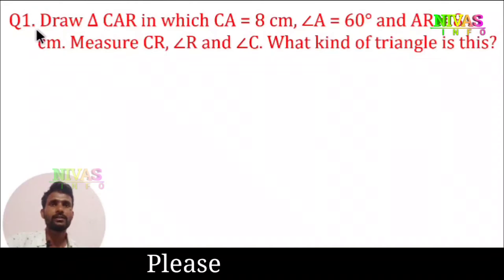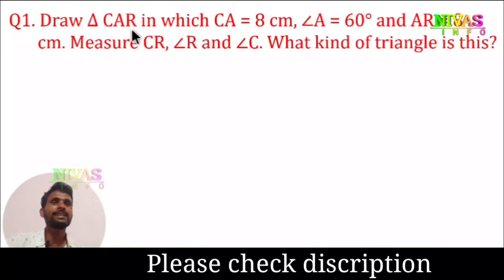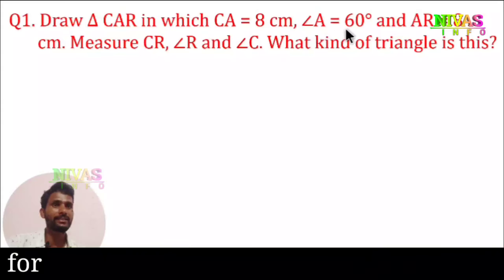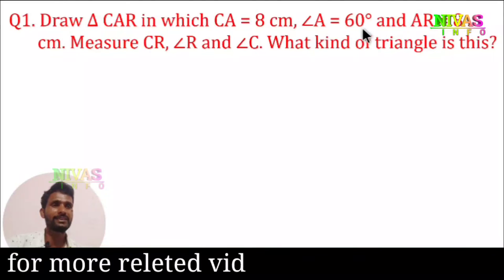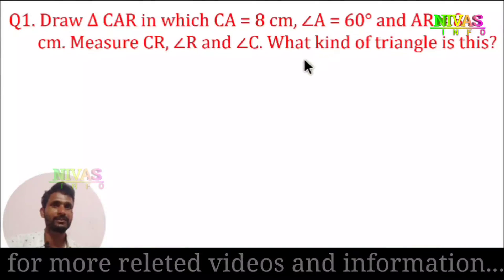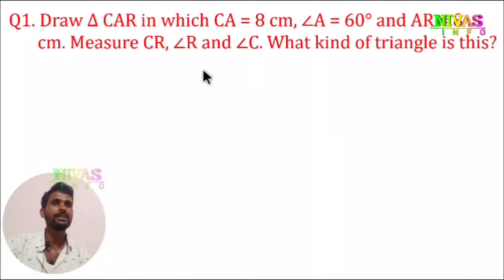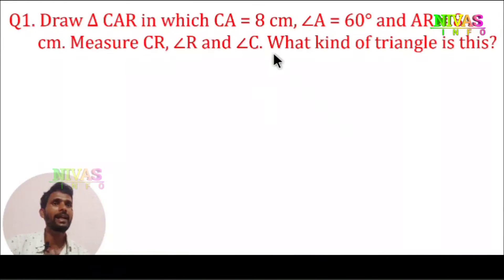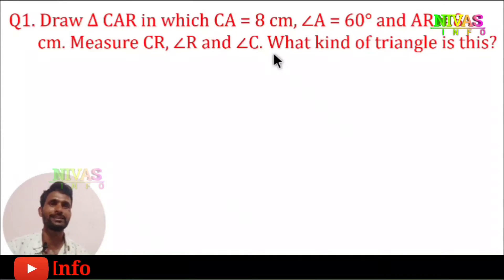Question number 1. Draw triangle CAR in which CA is equal to 8 cm, angle A is equal to 60 degrees, and AR is equal to 8 cm. Measure CR, angle R, and angle C. What kind of triangle is this?